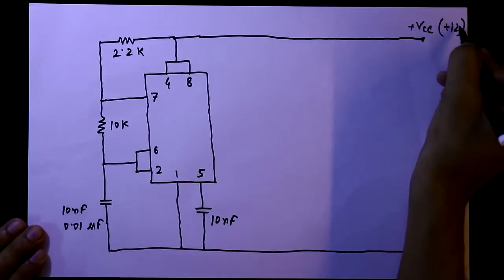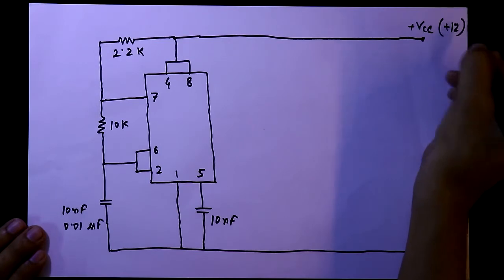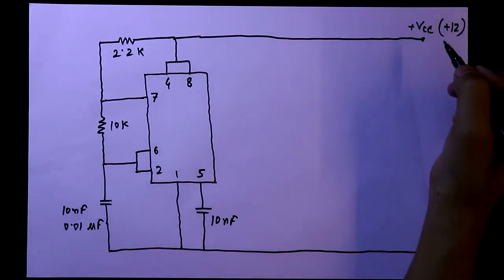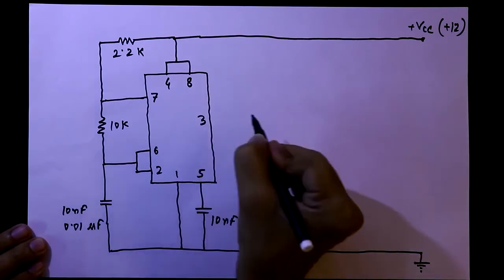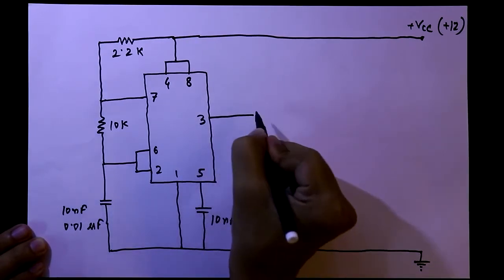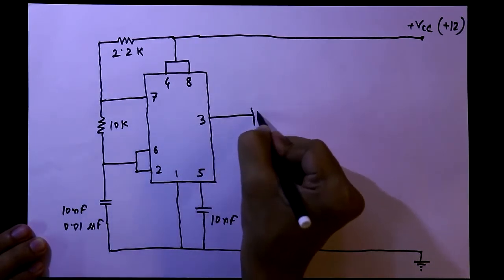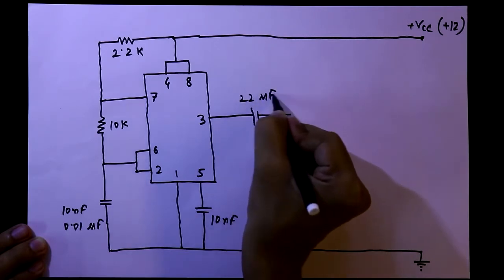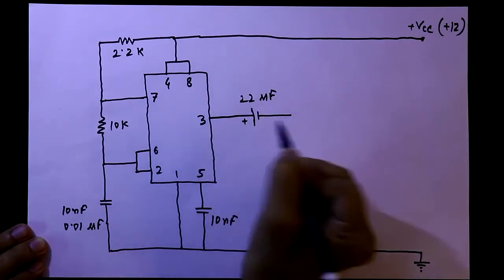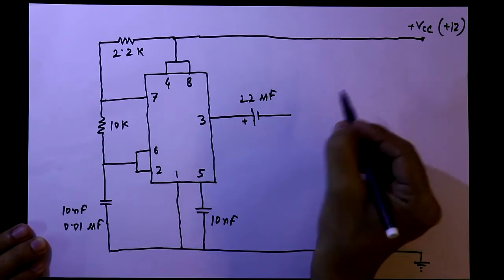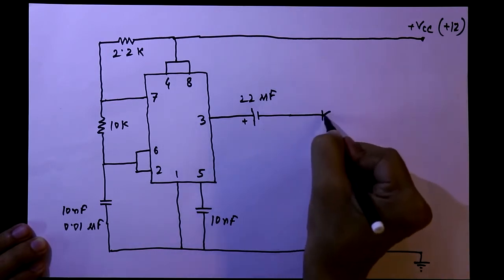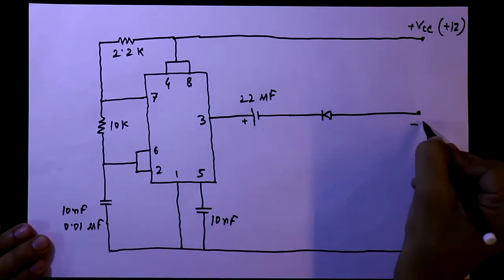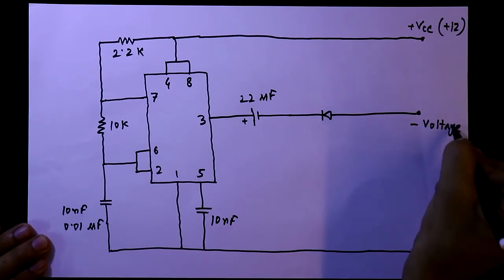We will apply plus 12V — you can connect any positive voltage below 15V. With pin number 3, we will connect one capacitor. It is 22μF. Its positive pin is connected to pin number 3, and the negative pin is connected to the cathode pin of a diode. From here, we will get negative voltage.